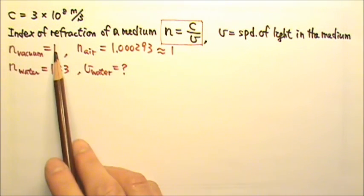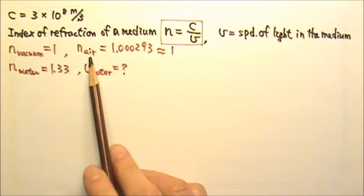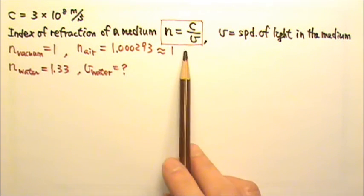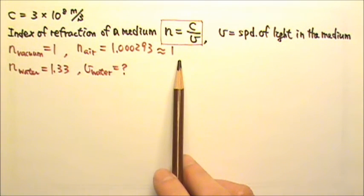Of course, N is 1 for vacuum. N is very close to 1 for air, so we usually just use 1 for the index of refraction for air.